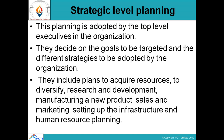Let us discuss strategic-level planning. This type of planning is adopted by top-level executives in the organization. They decide on the goals to be targeted and the different strategies to be adopted. Strategic planning includes plans to acquire resources, to diversify research and development, manufacturing new products, sales and marketing, setting up infrastructure, and human resource planning. Basically, strategic-level planning includes plans for getting inputs, materializing them, processing those inputs, and finally producing the output.